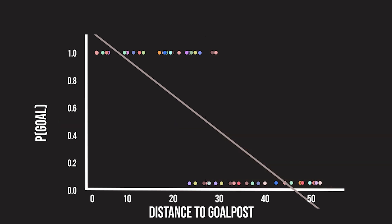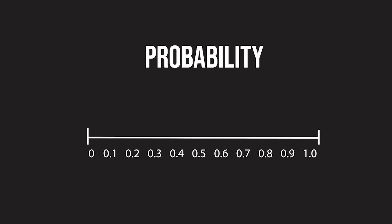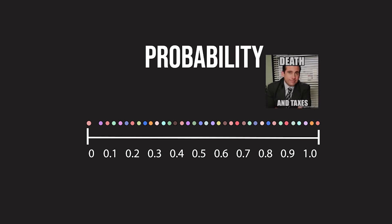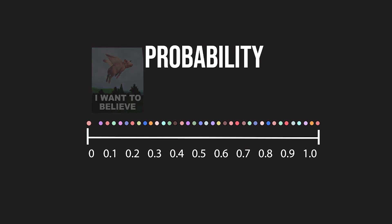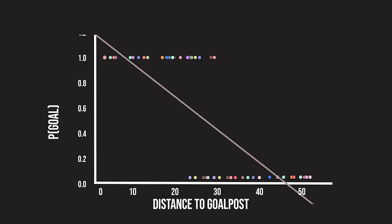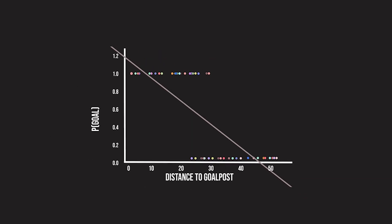There are a few problems with using linear regression for a classification problem like this. Linear regression outputs are not probabilities. In a binary classification problem, we are interested in the probability of an outcome occurring. Probabilities range between 0 and 1, but linear regression predicts values which can be negative or even greater than 1, which cannot be interpreted as probabilities. Using our linear regression model, shots made at a distance of 45 meters and greater have a prediction of negative goal probability, which doesn't make any sense.